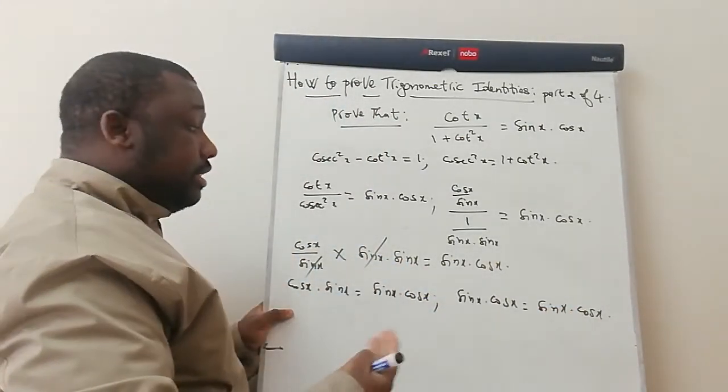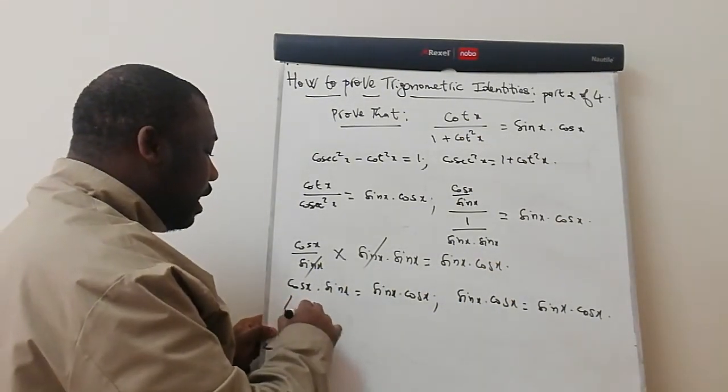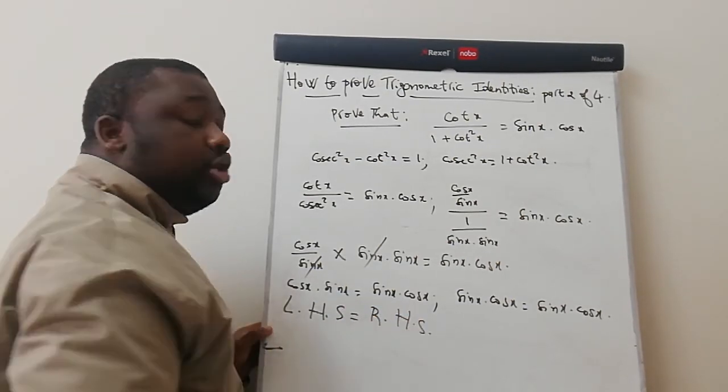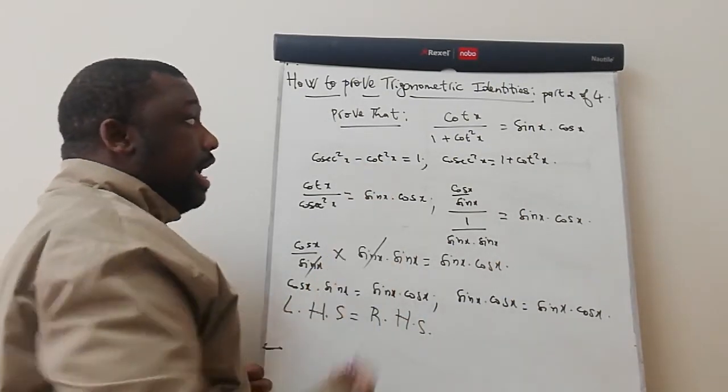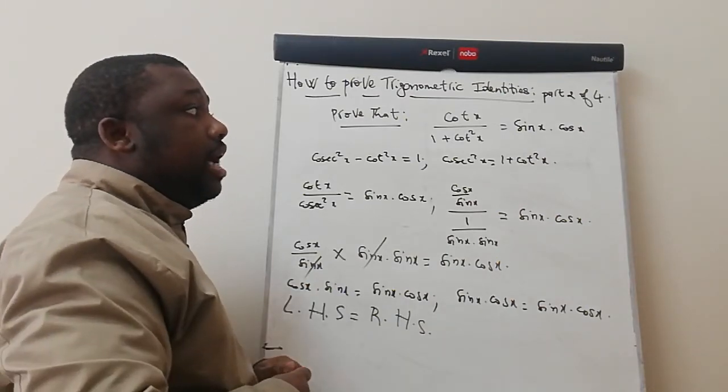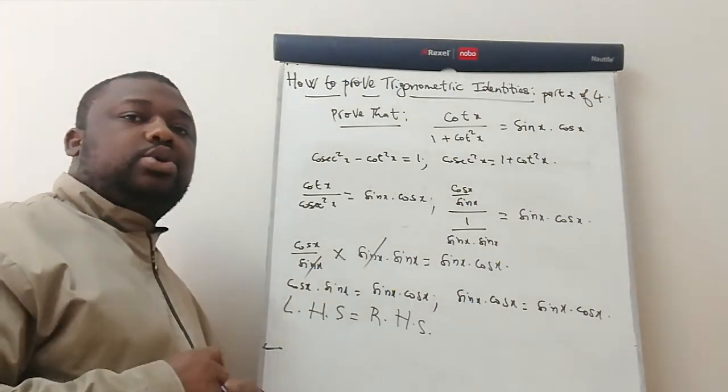From doing this, this is clearly visible that the left-hand side is equal to the right-hand side. This is what the question was asking you to do. We've just proved that cos x over 1 plus cos x is equal to sin x times cos x. Thank you guys for watching. Make sure you subscribe and see you on the next video.